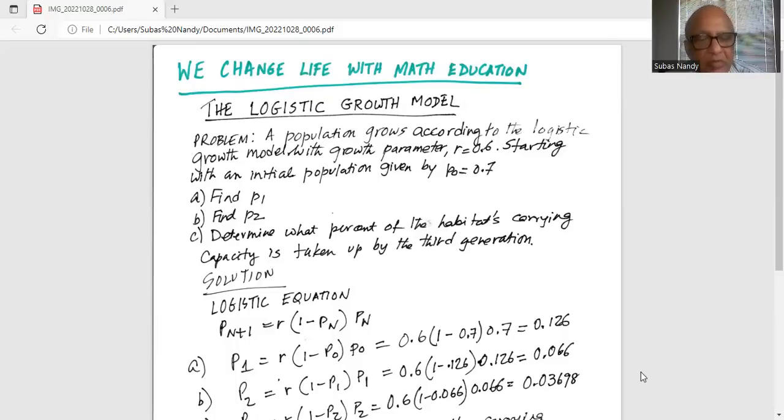p2 similarly is equal to r times 1 minus p1 multiplied by p1, which is 0.6 multiplied by 1 minus 0.126 and the whole thing is multiplied by 0.126, which is 0.066. Hence the second generation population is 0.066 when the initial population is 0.7 and the growth parameter is 0.6.